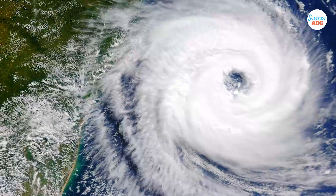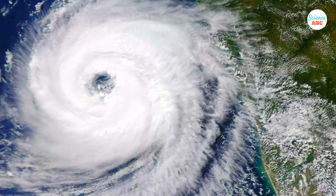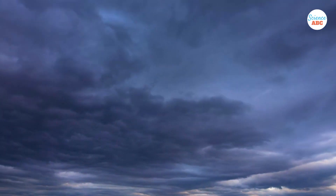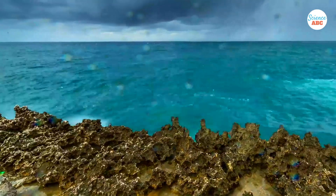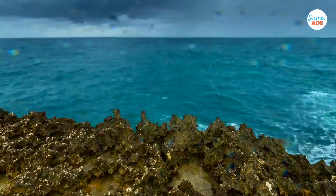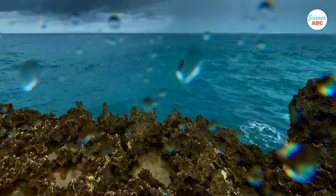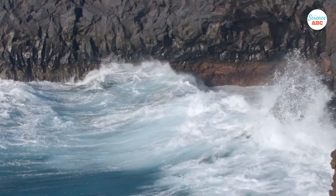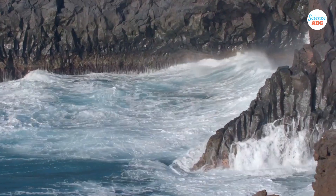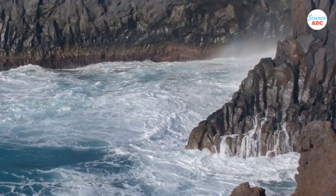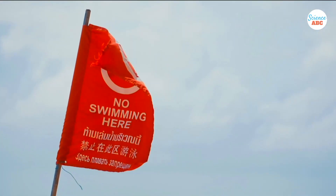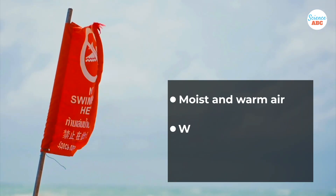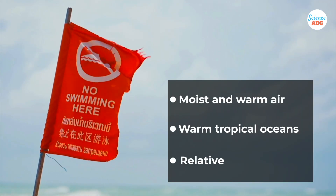Why do some hurricanes spin in one direction, while others spin the opposite way? You may already know that hurricanes, cyclones, and typhoons are different names for the same natural phenomenon: a tropical cyclone. In essence, they're all very violent storms that originate over oceans and seas and move towards land, potentially causing extensive damage to both life and property. They are caused by pre-existing weather disturbances, moist and warm air, warm tropical oceans, and relatively light winds.